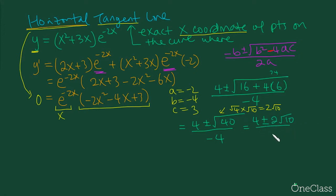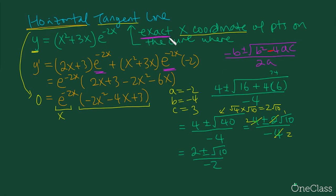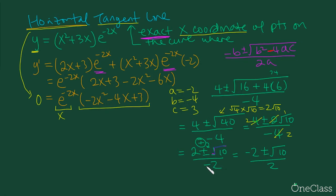We now have (4 ± 2√10) / −4. We can cancel by 2, but remember to cancel the entire expression — not just part of it. This gives (2 ± √10) / −2. Equivalently, this can be written as (−2 ± √10) / 2, since the negative just moves to the numerator and the plus-minus switches accordingly.